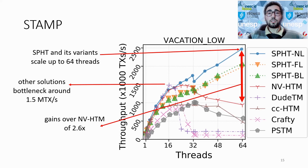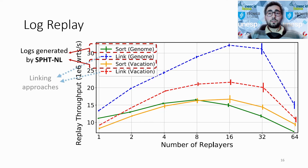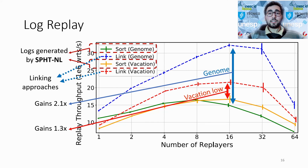We collected the logs of Vacation and Genom and measured the throughput of the log-replayer for a given number of concurrent threads. The curves labeled 'a-sort' used logs produced by the approach without hints, whereas the 'link' curves used logs produced by the linking approaches. In Genom at 16 threads, we have gains of 2.1x using the linking approach, and in Vacation the gains are 1.3x.